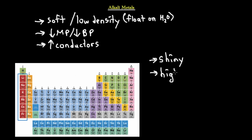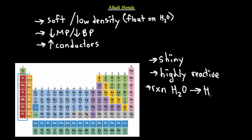Alkali metals are good conductors of heat and electricity, and they tend to be shiny. They are very highly reactive because they only have one electron in their outer shell and will easily give up that electron to become stable. They react with water to form hydrogen gas and a metal hydroxide ion, producing a strong base.